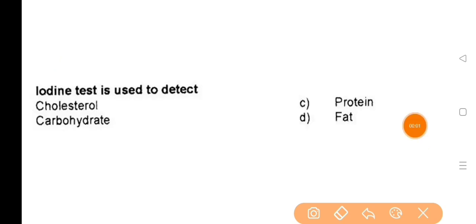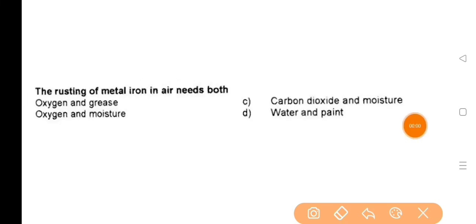Next question: Iodine test is used to detect — the answer is carbohydrate. Next question: The rusting of metal iron requires what conditions?